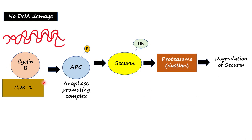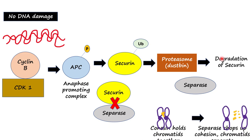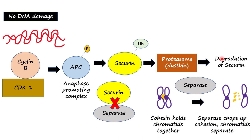Securin normally binds to and inactivates a protein called separase. When securin is sent for recycling, separase becomes activated. Separase chops up the cohesin that holds sister chromatids together, allowing them to separate.